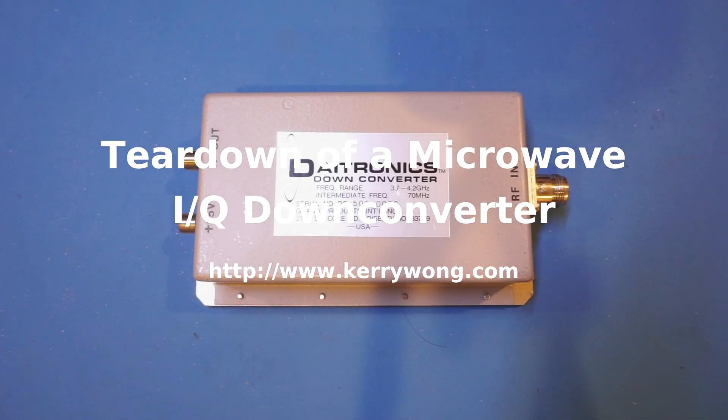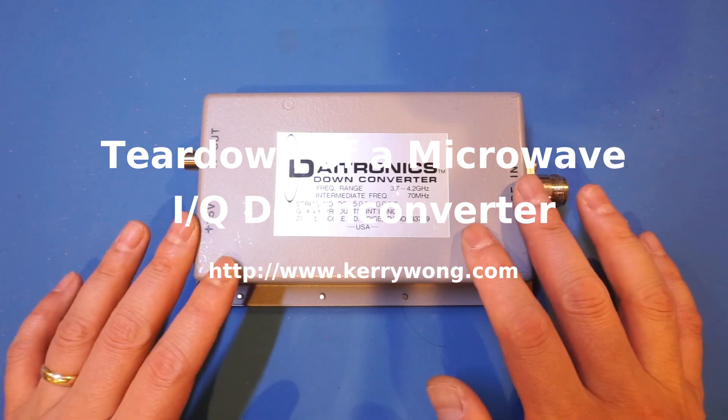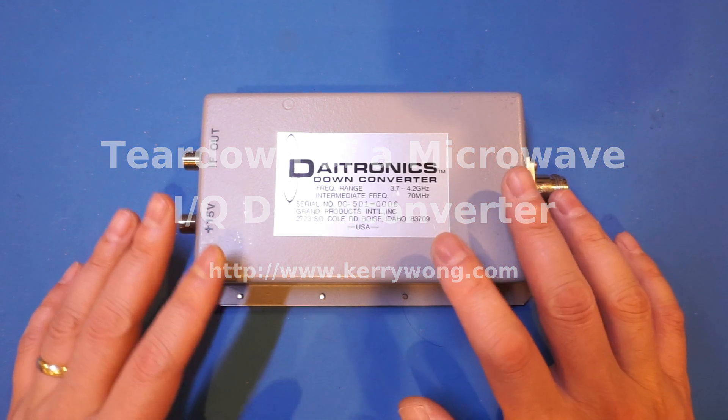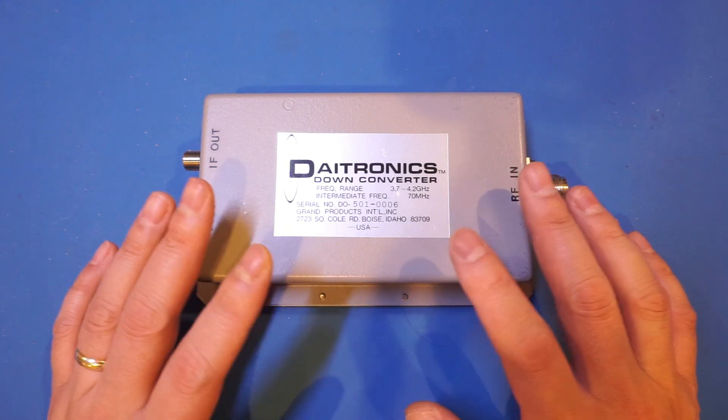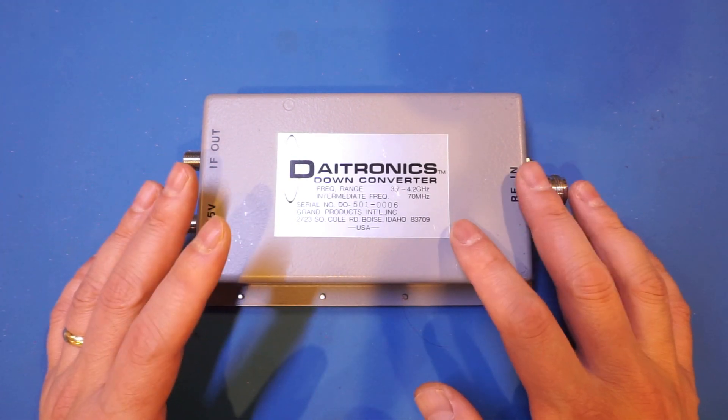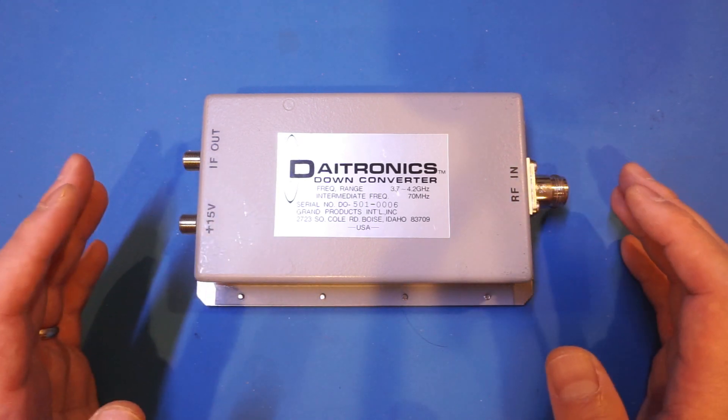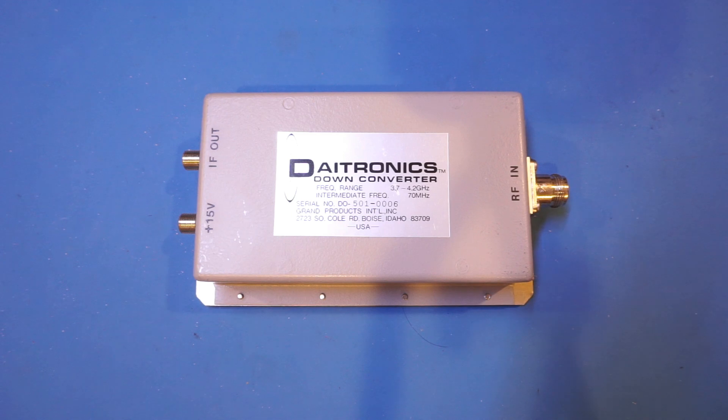Hi. What I have here today on the bench is a Datronix downconverter box. I got this one a while ago and my original plan was to use the enclosure for another project. In fact, this downconverter probably costs less than a new aluminum enclosure if I have to buy one. Anyway, I figured we should at least take a look at what this box does and also take a look inside before repurposing it.